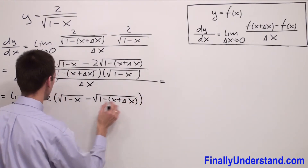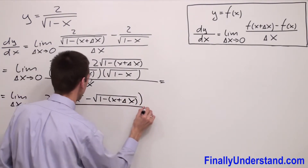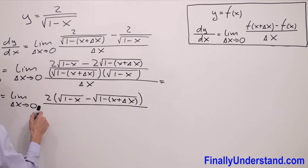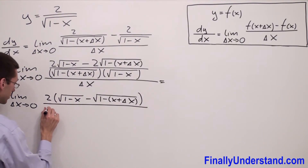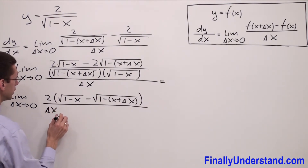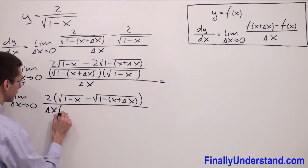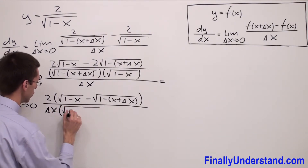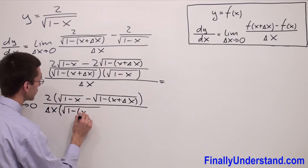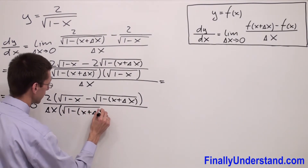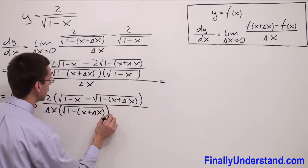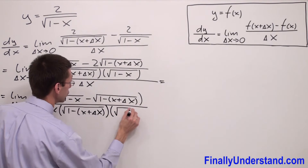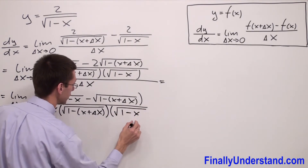Everything over square root of (1 minus x plus delta x) times square root of (1 minus x), all over delta x. So I have 2 times open parenthesis square root of (1 minus x) minus square root of (1 minus x plus delta x) close parenthesis, over delta x times square root of (1 minus x plus delta x) times square root of (1 minus x).